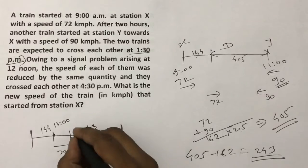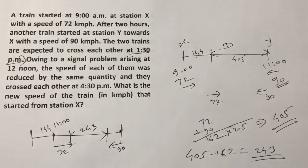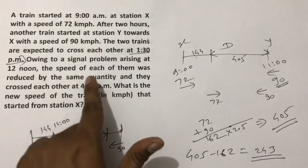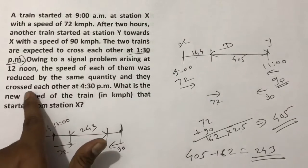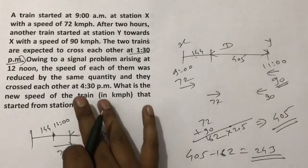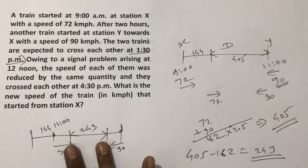Owing to the signal problem arising at 12 noon, the speed of each train was reduced by the same quantity. Both trains' speeds were reduced by the same quantity, and they crossed each other at 4:30 pm. Now, both speeds being reduced by the same quantity, this 243 km that remained at 12, to cover that.